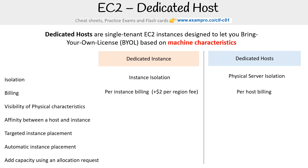For visibility of physical characteristics, you won't get any of that information with a dedicated instance. With a dedicated host, you do get visibility into details such as sockets, cores, host ID. This is really important when you have a bring-your-own-license scenario, where the license specifies a certain number of cores or sockets.